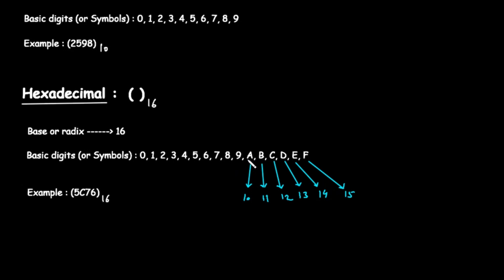The basic digits or symbols in the hexadecimal system are 0, 1, 2, 3, 4, 5, 6, 7, 8, 9, and then we use the letters A, B, C, D, E, and F.